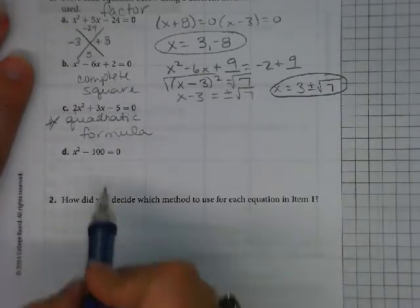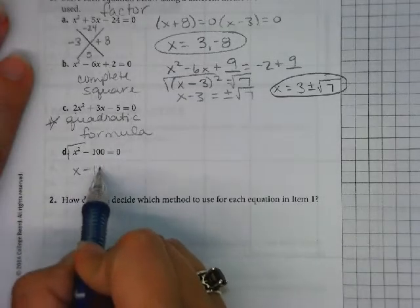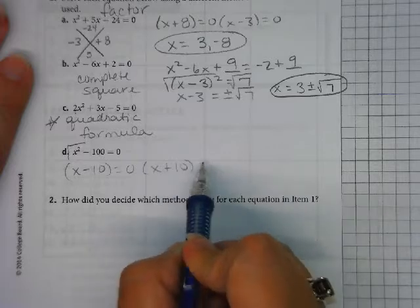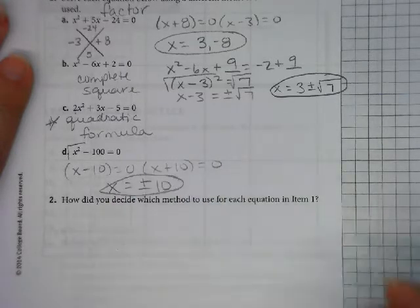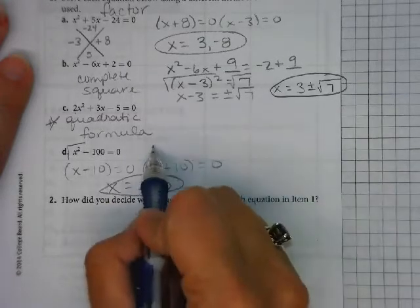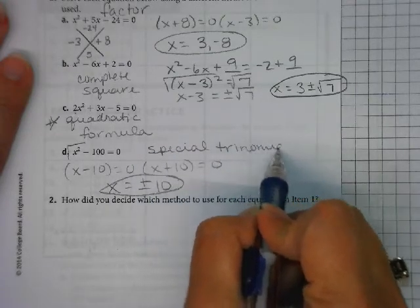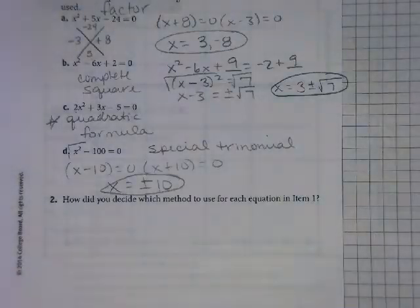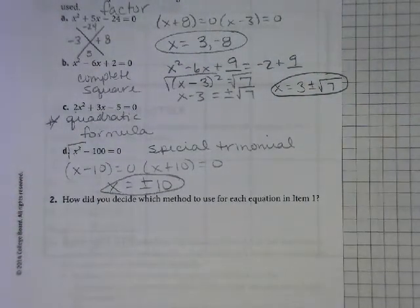It's just a little bit lengthier. This one is a difference of two squares. We did this a while back, so this is really just another way to factor. Your roots would be plus or minus 10. This is a special factor or special trinomial. So those are all the ways that we've talked about in this unit for finding roots.